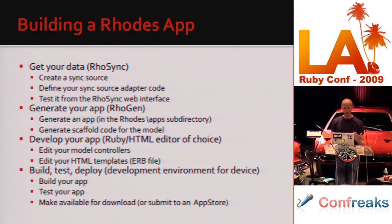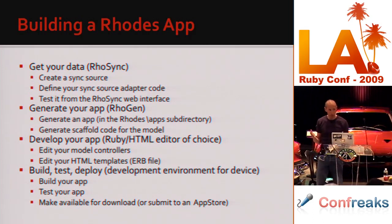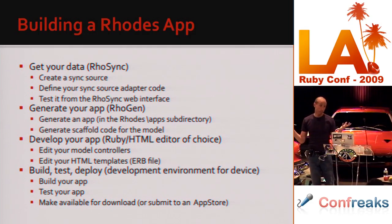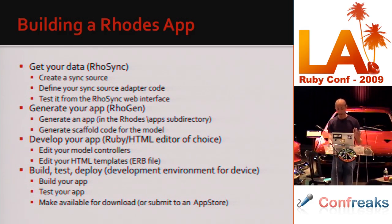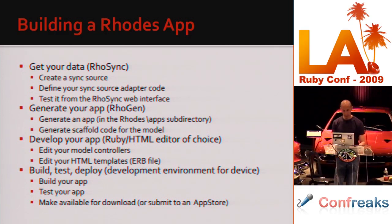High-level overview of building a Rhodes app with your data: generally it's better to start with RhoSync — that's what we do in our tutorial. If you're writing something that doesn't need sync data you can skip that step. Generate your app with rhogen on the command line, then develop your app in your Ruby HTML editor of choice — I love TextMate. Then you build your app. Let's go ahead and do that.